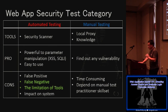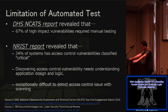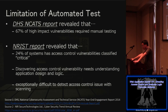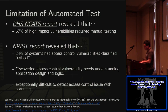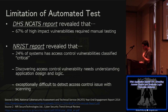I want to focus on the limitations of automated scanning. There are two key research findings. First, DHS — the Department of Homeland Security — reported that 67% of high-impact vulnerabilities require manual testing. Second, NRI Secure Technologies, a Japanese security company, revealed that 24% of access control vulnerabilities are classified as critical, and discovering them requires understanding web application design — they are extremely difficult to detect with scanning alone.